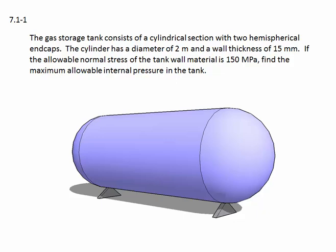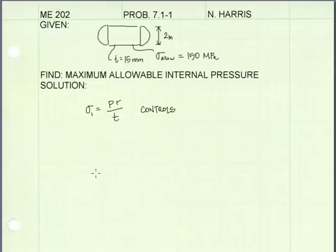If the allowable normal stress of the tank wall material is 150 megapascals, find the maximum allowable internal pressure in the tank. For a cylindrical tank, the hoop stress, or circumferential stress, controls.